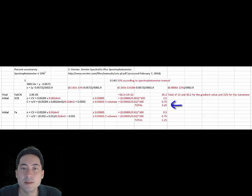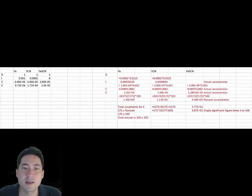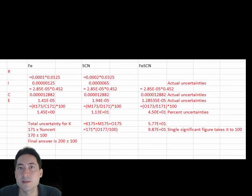For the unknown one, the initial concentration uncertainties are worked out in a similar way to the standards. So the thiocyanate has a 3.25% uncertainty and the iron ions have a 1.2% uncertainty.